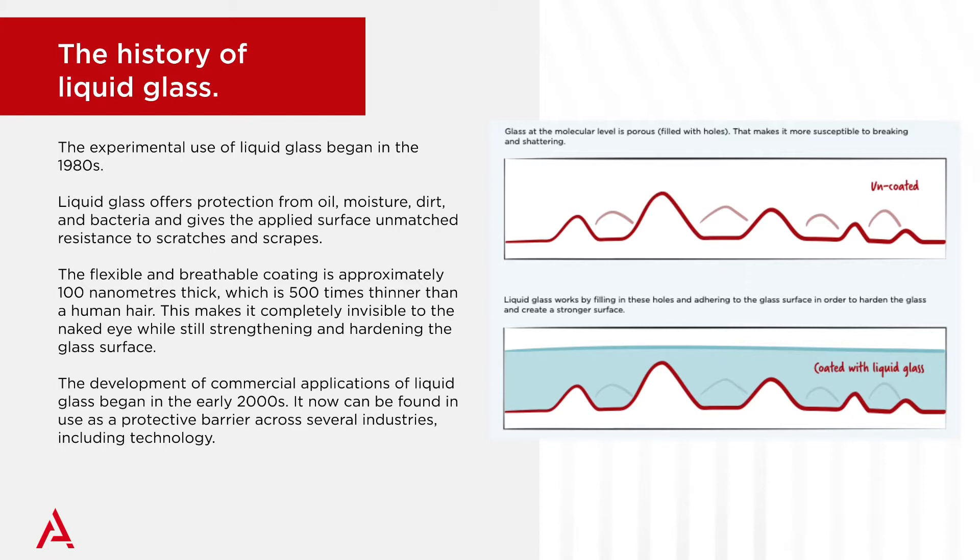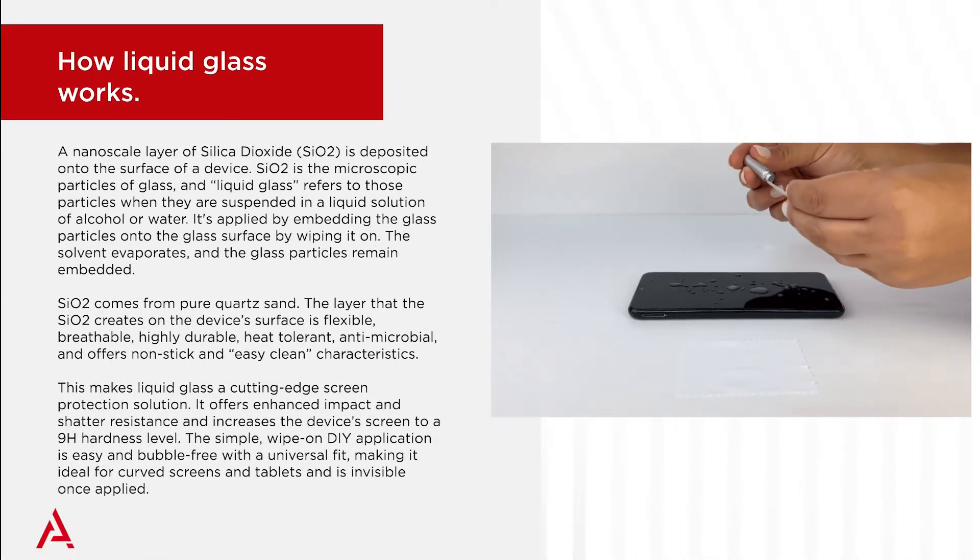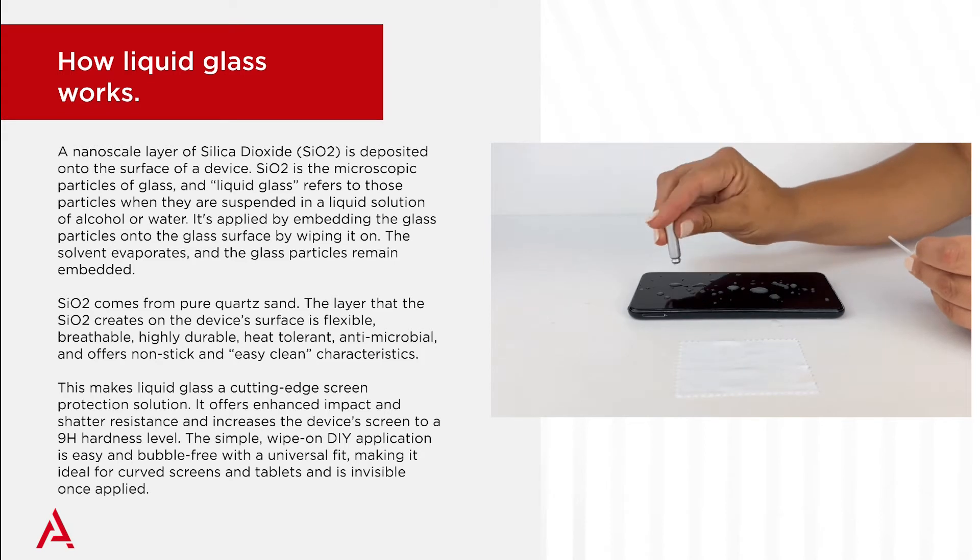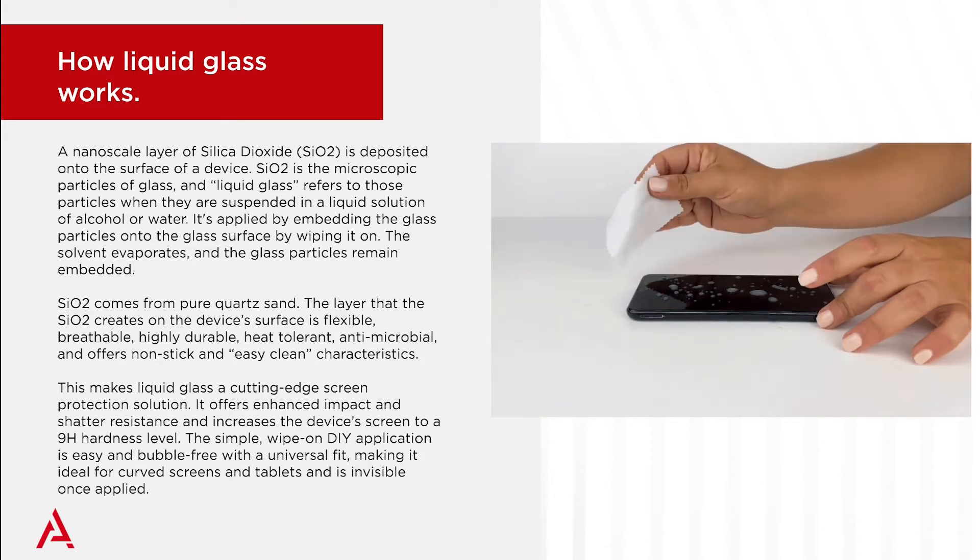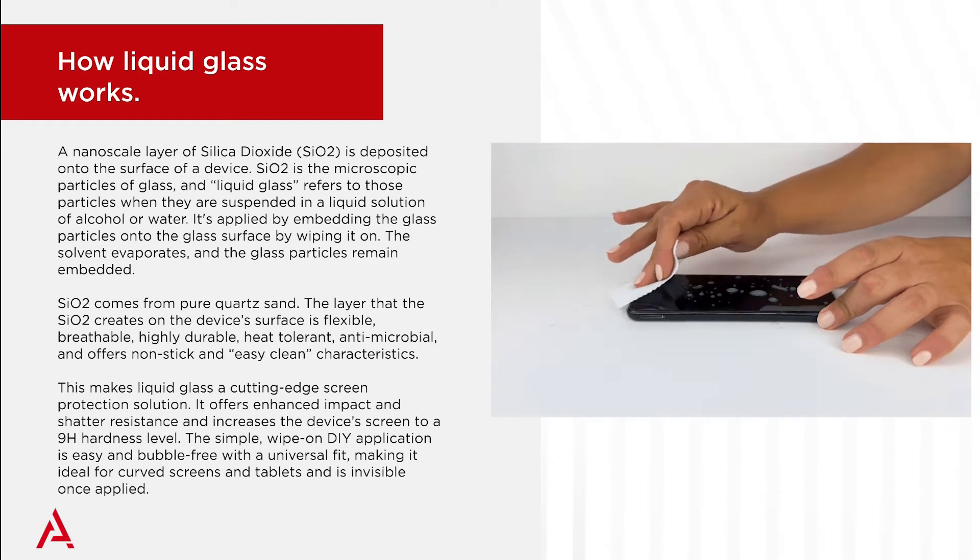Now that we know how the use of liquid glass as a screen protector originated, let's go over how it works. To start, we need to understand nanotechnology, which is the understanding and control of matter at dimensions of the nanoscale, which is approximately between 1 and 100 nanometers.